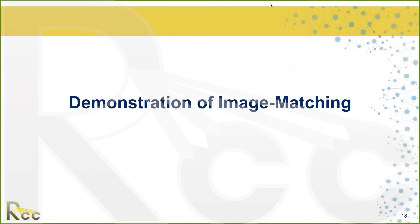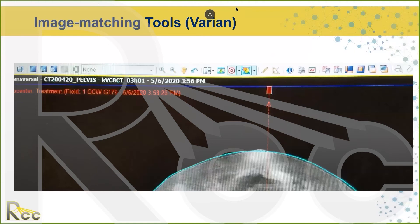Question: Is it possible to do CBCT if the equipment has no KV attachment? No, but there are places that have developed something called CT-on-rails, which gives you a CT scan without a KV attachment — though it's not as useful as cone beam because you lose the KV capability. However, for certain Varian machines, you can get a retrofitted KV attachment added onto your machine.